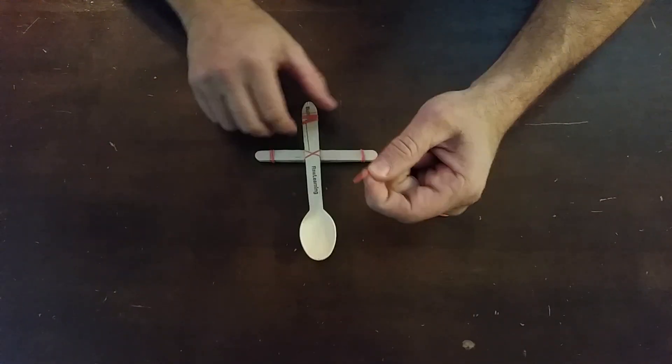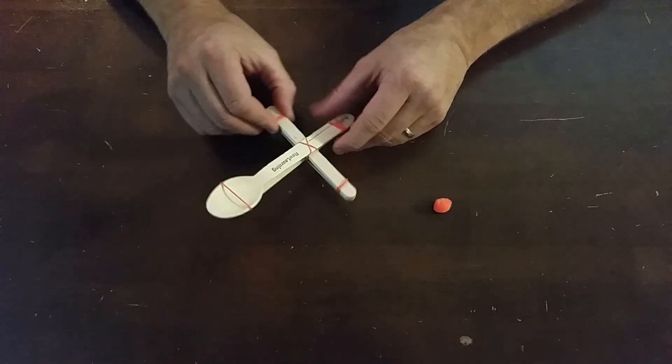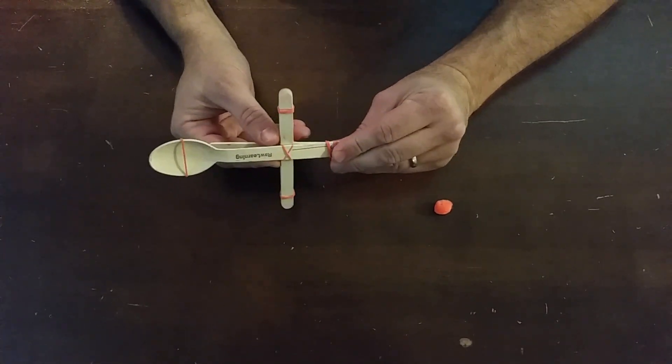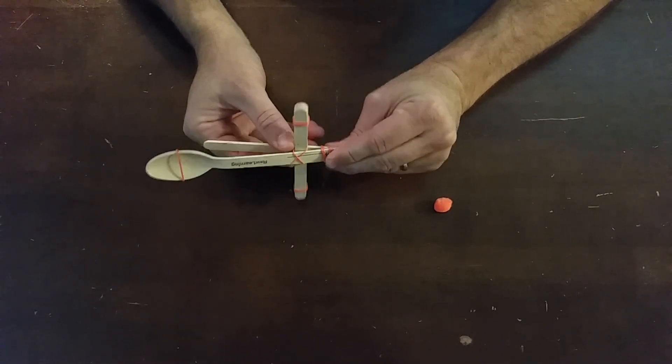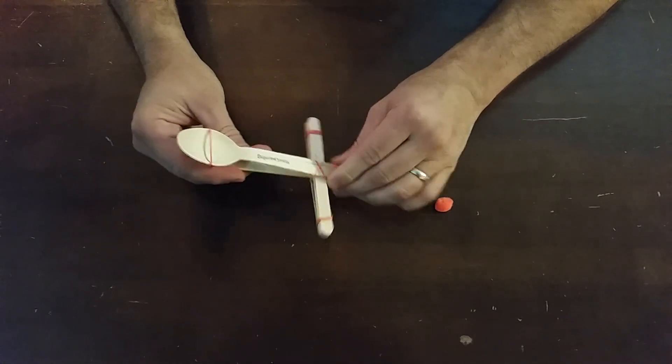Okay, the last rubber band simply goes over top of the spoon like this. So we've made our catapult and now it might need a little bit of adjustment.